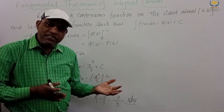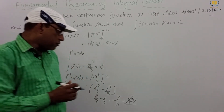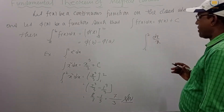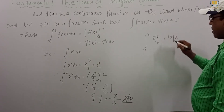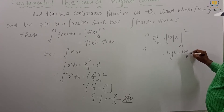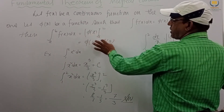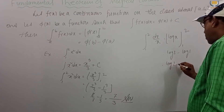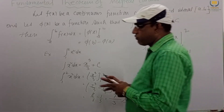We just find the indefinite integral, then substitute the upper and lower limits to get our definite integral. For the next example: integrate from 1 to 2 of dx by x. Without limits, integration of dx by x gives log x (base e). With limits 1 to 2, this is log 2 minus log 1. Since log 1 is 0, the answer is simply log 2.